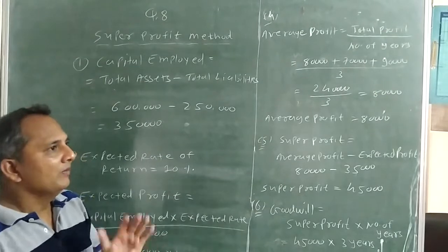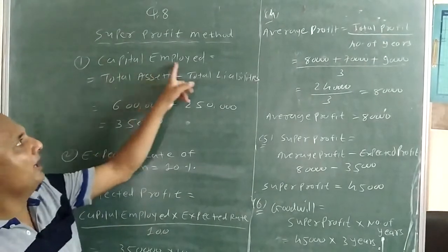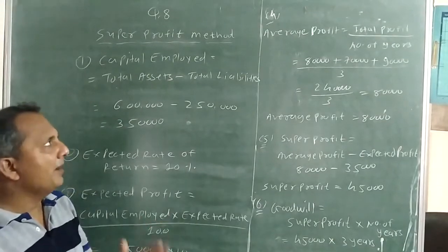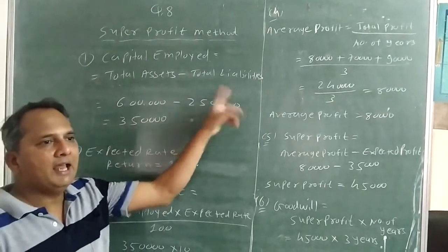In this method, first step is to find out capital employed. Formula of capital employed is total assets minus total liabilities.